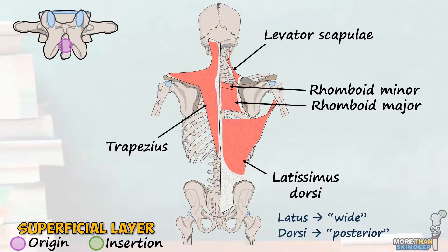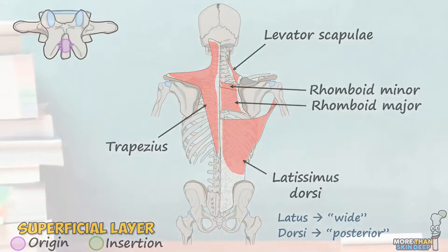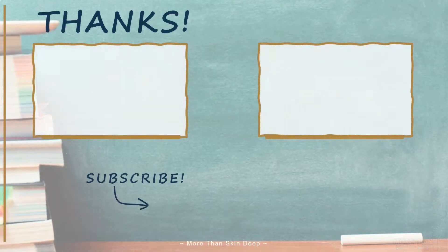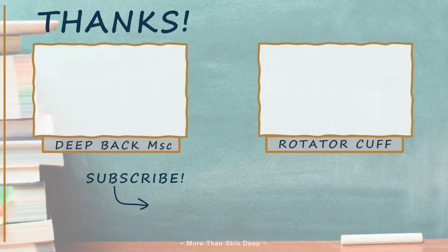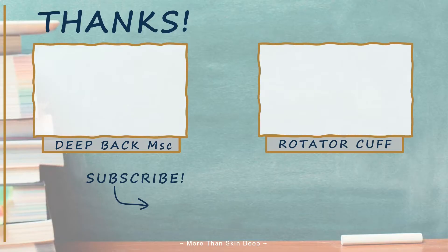And there we go — that's all the superficial muscles of the back. Let's look at them all together to appreciate how they relate to one another. Now that you've finished this video, you should have familiarity with the deep, intermediate, and superficial muscles of the back. I haven't covered much on innervation as the nerve paths can get complex and would warrant their own video in the future. For now, I suggest getting a big cup of tea and revising all these muscles again. Thanks for watching, I hope you learned something, and have a great day.